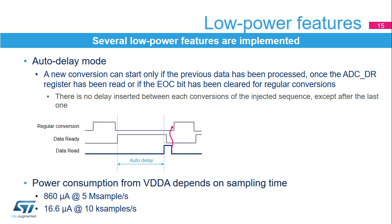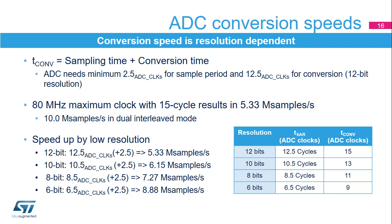Power consumption from VDDA power supply depends on sampling time, from 16.6 microamps at 10 kilosamples per second to 860 microamps at 5 megasamples per second. For low sampling rates, the current consumption is reduced almost proportionally. The global conversion time is equal to the sampling time plus the conversion time. The ADC needs a minimum of 2.5 clock cycles for the sampling and 12.5 clock cycles for conversion for 12-bit mode. With an 80 MHz ADC clock, it can achieve 5.33 megasamples per second. For higher sampling speed, it is possible to reduce the resolution down to 10, 8, or 6 bits.